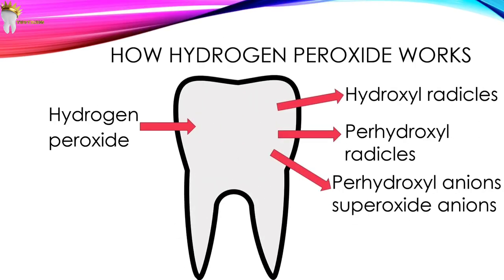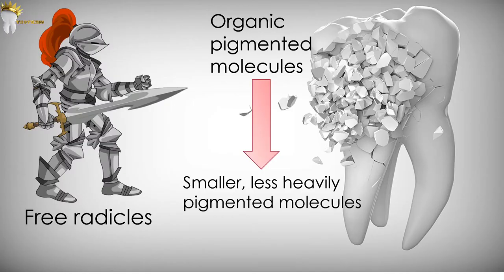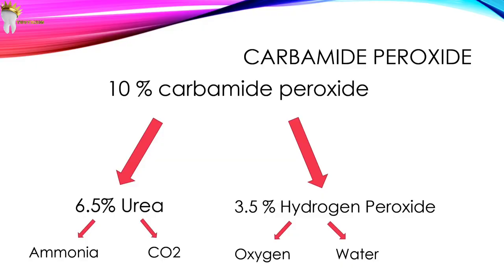Hydrogen peroxide has a low molecular weight, so the small molecule diffuses through the organic matrix of the enamel and dentine. It then dissociates to produce unstable free radicals — hydroxyl radicals, perhydroxyl radicals, perhydroxyl anions, and superoxide anions. These free radicals attack the organic pigmented molecules in the tooth enamel. These pigmented molecules have double bonds, and the free radicals attack these double bonds, resulting in smaller, less heavily pigmented molecules — causing a shift in the absorption spectrum and thus the bleaching of the teeth.